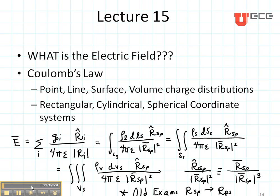We looked at Coulomb's Law in the four forms: point, line, surface, and volume charge distributions. And those four are shown right here. In the case where you have point charges, you sum up all of the point charges divided by the distance squared times 4π epsilon, with the unit vector Ri.